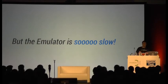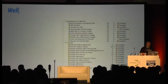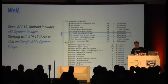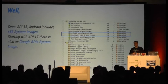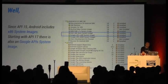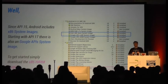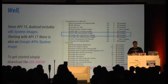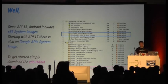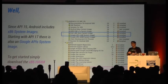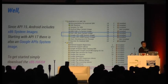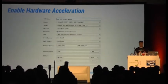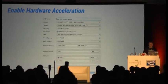The emulator used to be slow, and everybody tells me that. But with API 15 we shipped x86-based system images, and since API 17 we also have the Google APIs image. With these images together with the Intel HAXM plugin, you can enable hardware acceleration and actually run at near real-hardware speed. In the SDK Manager you just download the images and plugin, then use the AVD Manager to create an x86 emulator.